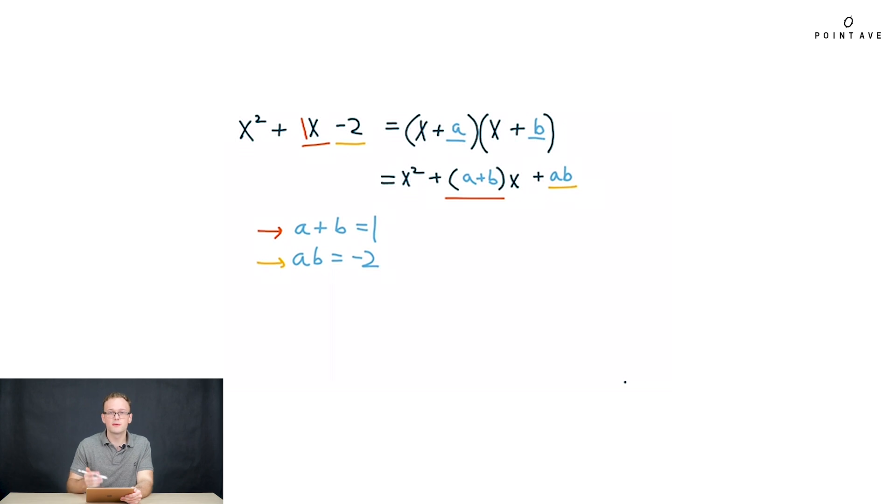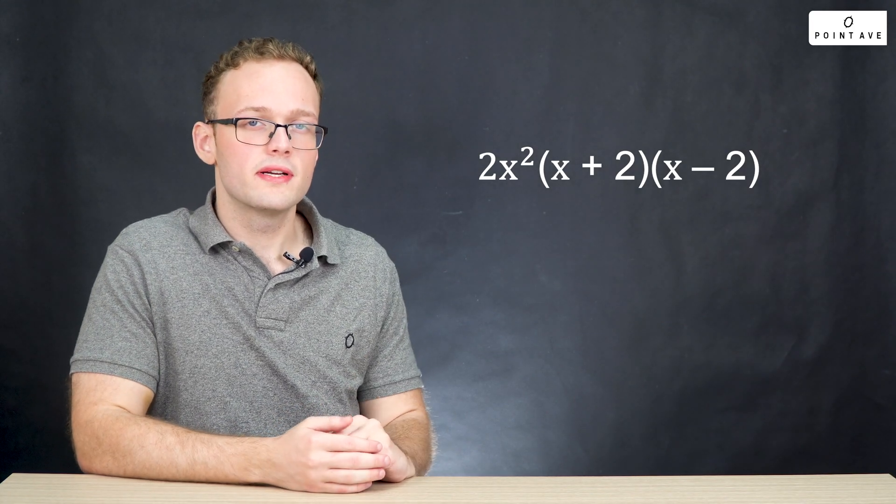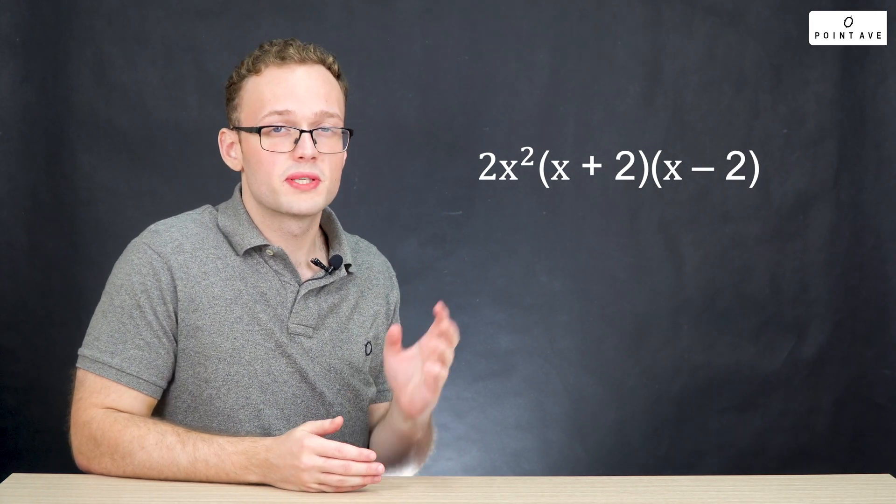Now we could solve this system of equations or more often what we do is just guess at what these numbers could be. What two numbers can we multiply to get negative 2 and then add to get 1? We can do a equals 2 and b equals negative 1. These are going to be the solutions for a and b that will give us our final factored form, x plus 2 times x minus 1. Adding back in our 2x squared from before, this gives us our final factored form.